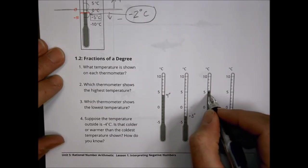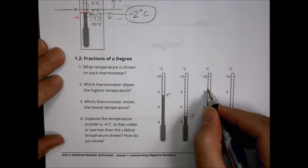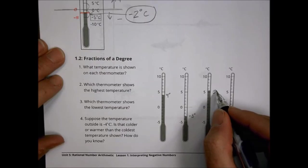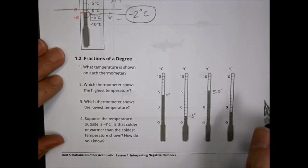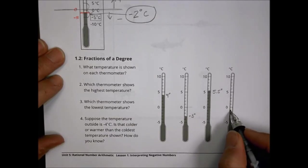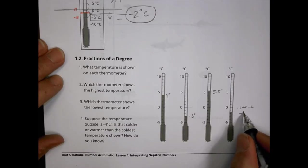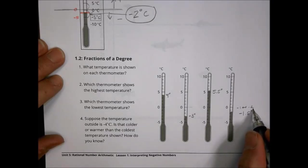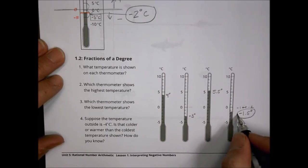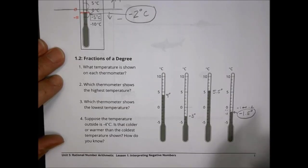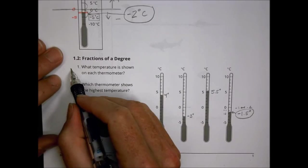The third thermometer is above five, going up to what would be six, but we're not quite there — it's about five and a half. You could write that as 5.5 degrees or five and a half degrees as a fraction. The fourth thermometer goes down one but not two, so it's between negative one and negative two — that's negative 1.5 degrees, or negative one and a half.